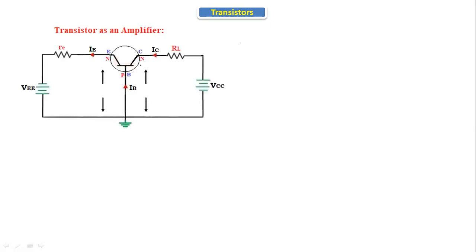Hello everyone, today's topic is transistor as an amplifier. An amplifier is a device which increases the signal strength. We'll see why the transistor acts as an amplifier with verification. I am taking a common base configuration circuit here, where the base is connected to ground and is common for both the emitter and collector — that's why it is called a common base configuration.